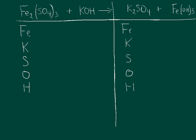On the reactant side I can see I have two irons, so I'll list that — two irons. I just have one potassium, so one potassium. When I get to sulfur, you can see it's in parentheses with a subscript three outside. That three tells me to multiply everything inside the parentheses by three. Since I only have one sulfur to begin with, I multiply by three and end up with three sulfurs.